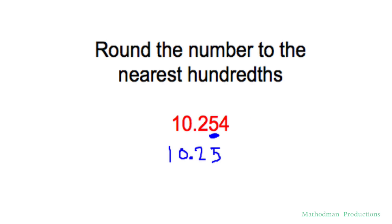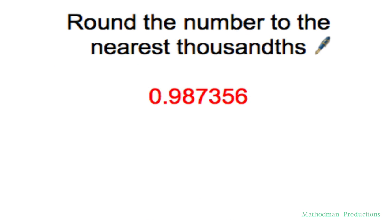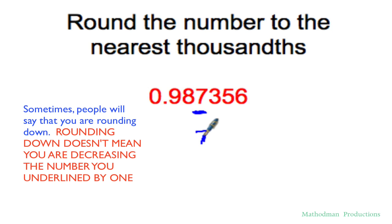Round to the nearest thousandths. Tenths, hundredths, thousandths - underline it. Look at the number to the right of it. That's 4 and below, everything just drops off. 5 and above, that changes that 7 to an 8. So it's a 3, everything just drops off. The 7 remains as a 7.